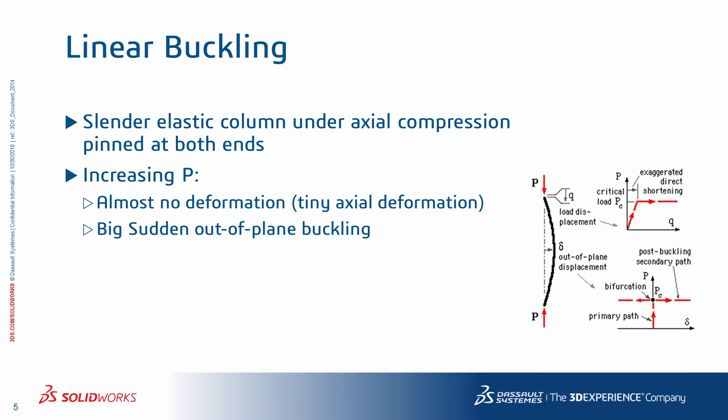A slender elastic column under axial compression pinned at both ends is the classic prototype for buckling studies. We assume an ideal scenario: the column is perfectly straight before loading and the applied compressive load is perfectly coaxial with the column. As you increase the force P, there is almost no deformation except for the invisible tiny axial deformation, but no buckling or lateral deformation and the beam remains stable.